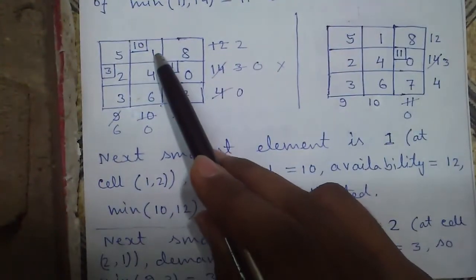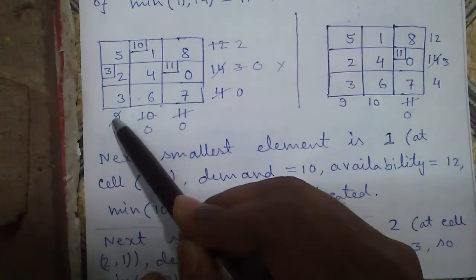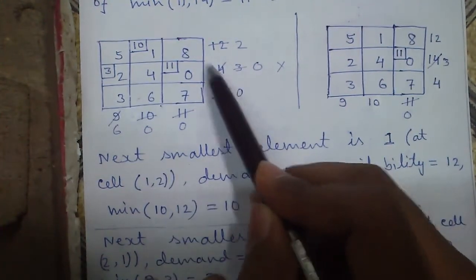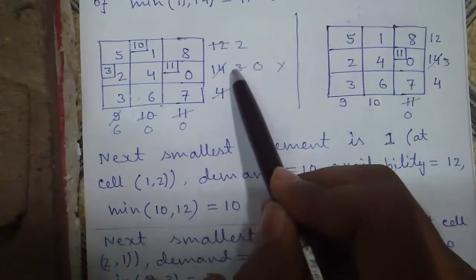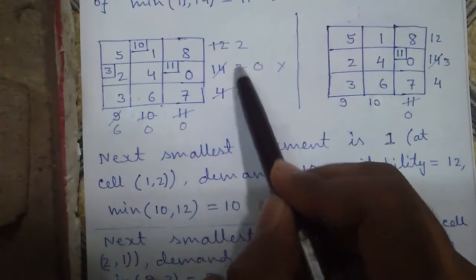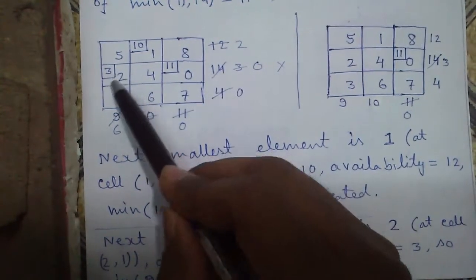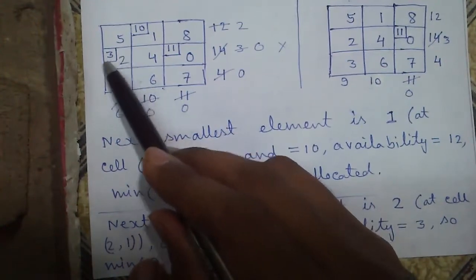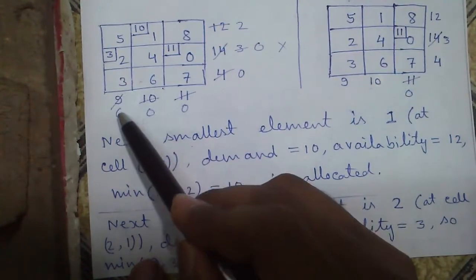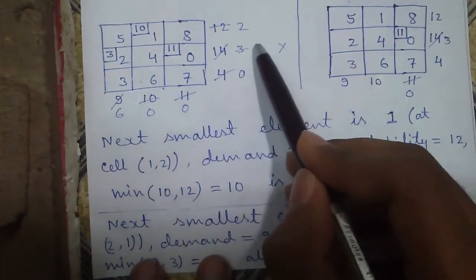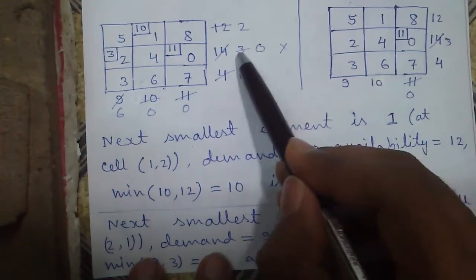Next smallest element is 2 and against 2 demand is 9 and supply we have already allocated 11, so supply is now 3. So we can allocate only 3 out of 6 against 2. So after allocating 3 our demand will reduce to 6 and supply will be exhausted, that will become 0.